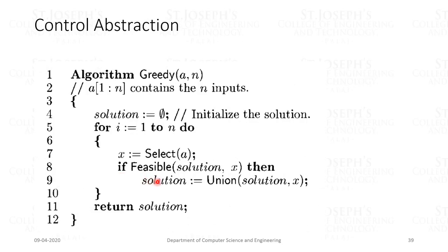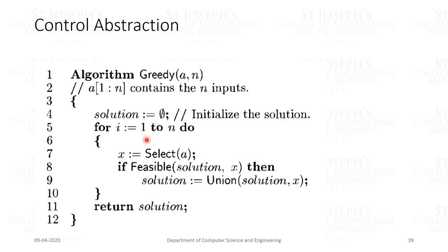Let us see the working of a greedy algorithm through its control abstraction. The n inputs are kept in array A[1..n]. The function 'select' selects an input from the array and removes it; its value is assigned to x. The function 'feasible' is a boolean-valued function that determines whether x can be included in the solution vector. The function 'union' combines x with the solution and updates the objective function. The function 'greedy' describes the essential structure that a greedy algorithm will take once the functions select, feasible, and union are properly implemented.